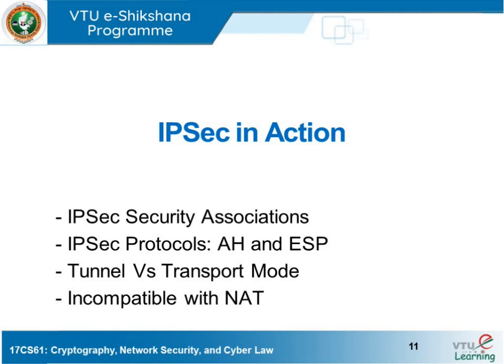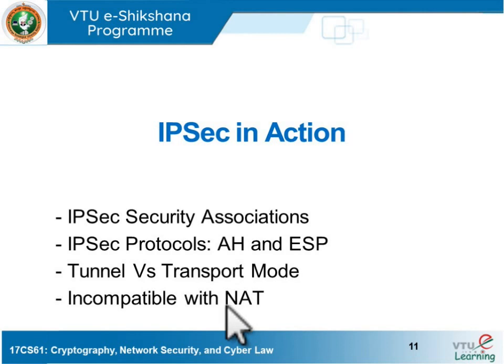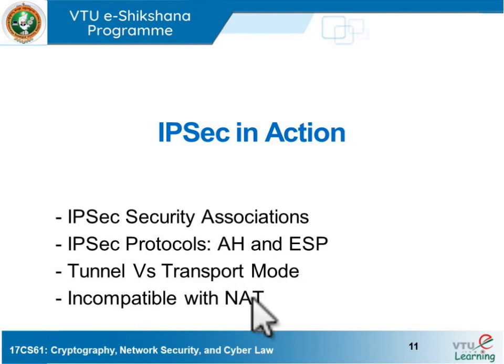Now let's move on to the next topic: IP security when it is put into action. We will discuss security associations — the secure communication established between two communicating entities — followed by the protocols involved: Authentication Header (AH) and Encapsulating Security Payload (ESP). Then we'll cover the two modes of operation: tunnel mode and transport mode, and finally, incompatibility with NAT.